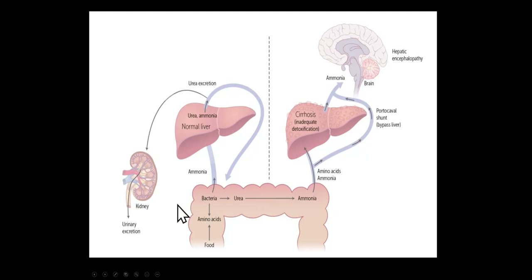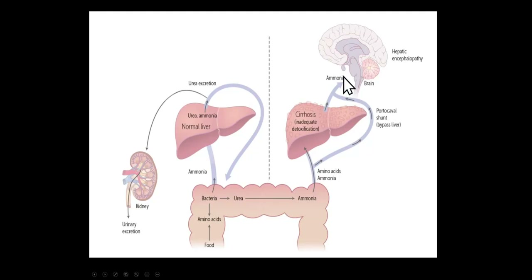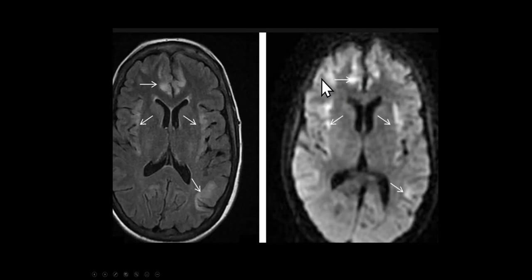Normally, ammonia produced by bacteria in the GI tract is broken down in the liver. If we have cirrhosis or another liver problem, that ammonia affects the brain. An MRI scan in these patients may show cortical edema.